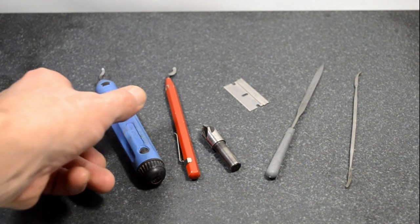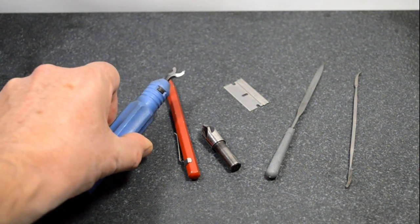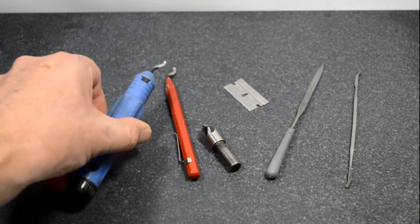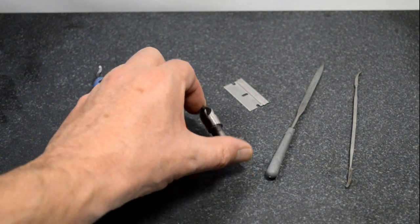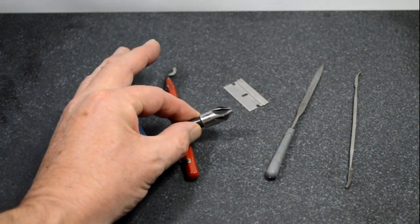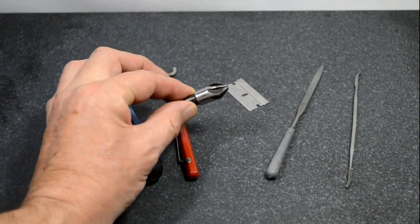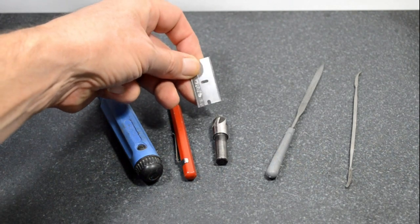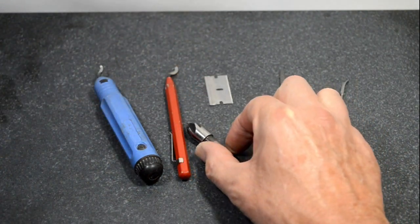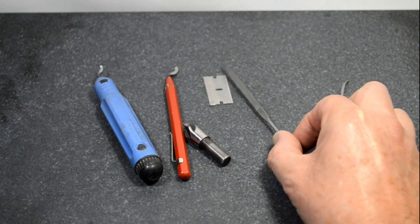Starting with the swivel deburr and the countersink, you can use an exacto knife or razor blade, and of course files.